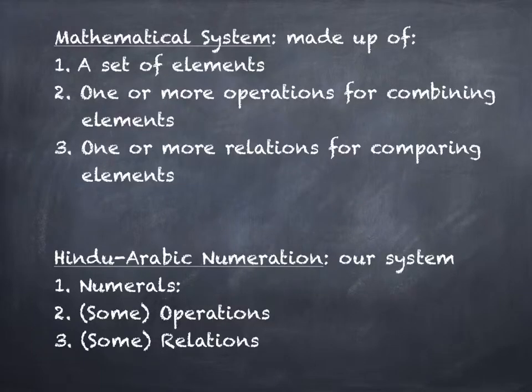So the first thing I want to talk about is what we mean by a mathematical system. If you have your phone out, now it's time to put it away. A mathematical system is made up of three different ideas. One is a set of elements - that's the numerals that we use. So in our system, we use what numerals? Zero through nine. This is our Hindu-Arabic system.